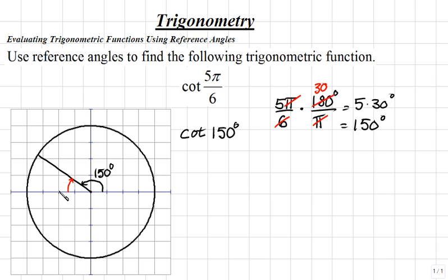We've already traveled to 150, so the remaining part will be our reference angle. To find this, we'll subtract 180 degrees minus 150 degrees. Subtracting, 1 minus 1 is nothing, 8 minus 5 is 3, and 0 minus 0 becomes 0.